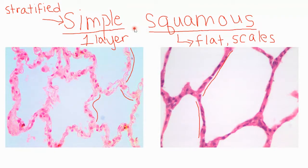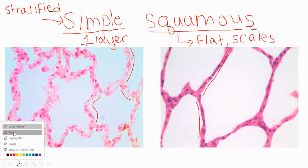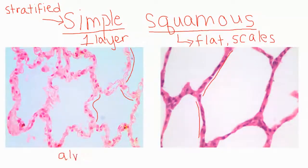Simple squamous epithelium is found in the lungs. When you look at a simple squamous epithelium slide, you see big white spots — these are open spaces in the tissue. In your lungs, we have alveoli, or air sacs. If we chop those air sacs open in cross section, we'd have a ring of cells on the outside and an open space in the middle where you'd have oxygen. Your tricks to identifying it: look for these big open spaces. The location is the alveoli — the air sacs of the lungs.